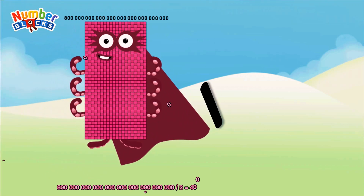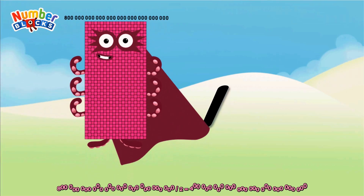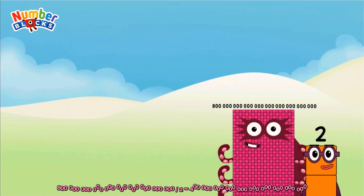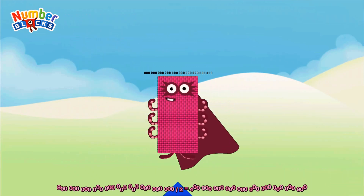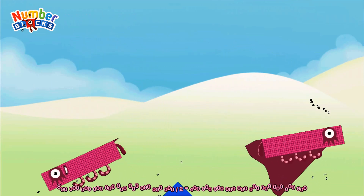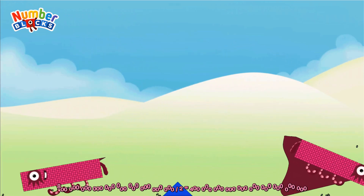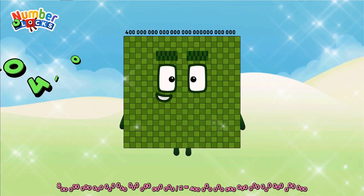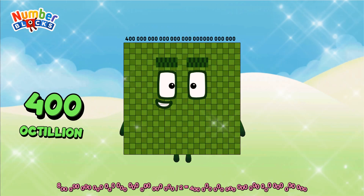800 octillion divided by 2 equals 400 octillion.